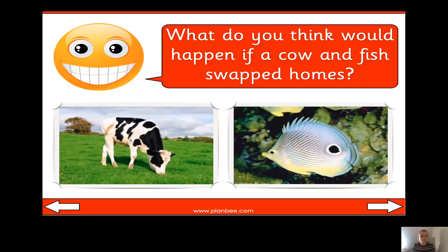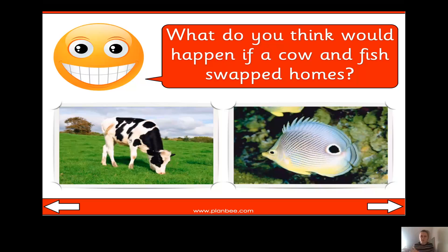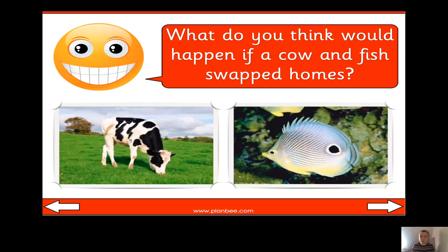A cow would not be able to breathe underwater, so it wouldn't go well if a cow lived there. There's also not much grass underwater for the cow to eat. As for the fish, it has to live underwater and there is no water where the cow lives in a field. A fish breathes using its gills, taking in the oxygen it needs that way, so without water it couldn't survive.